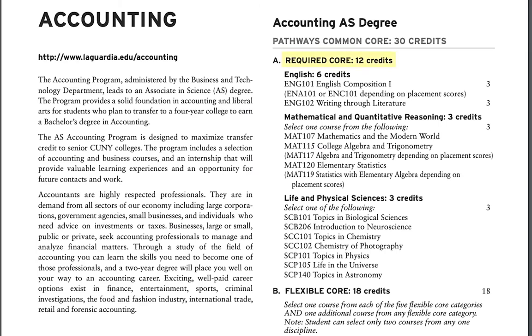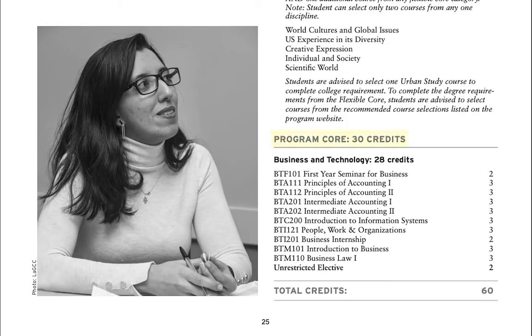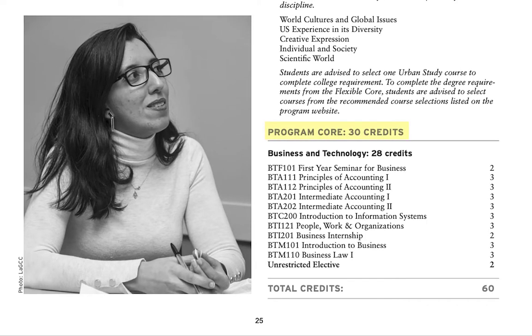Required Core and Flexible Core Courses will be your general education requirements, whereas the Program Core will be a set of courses within your major. The Accounting Degree, just like most of the Associate Program Degrees, consists of 60 credits.